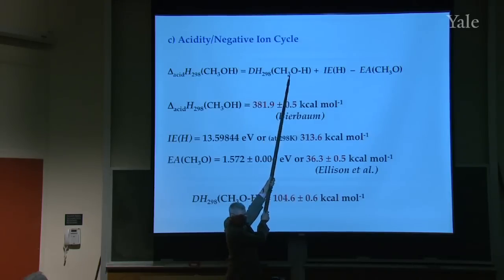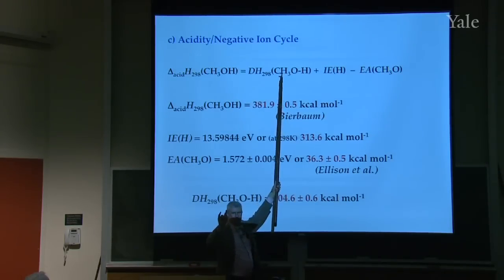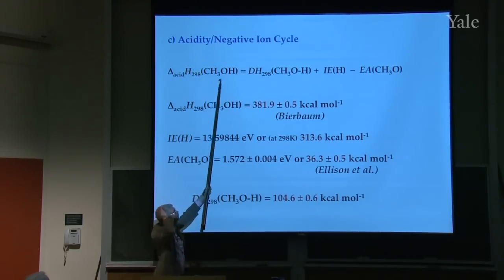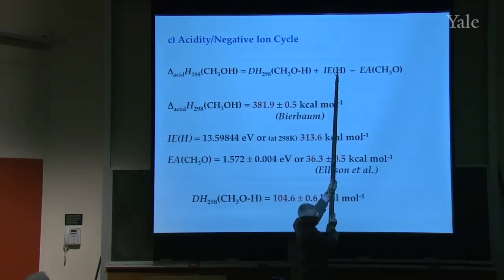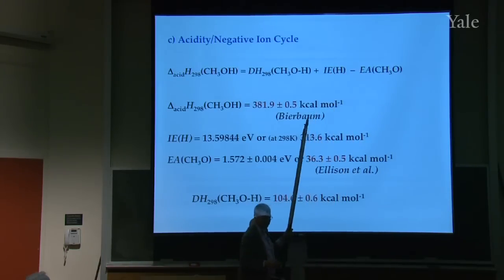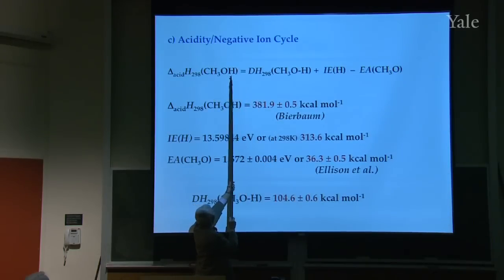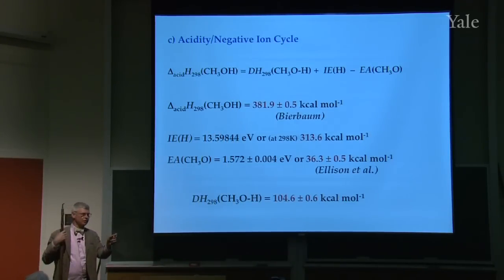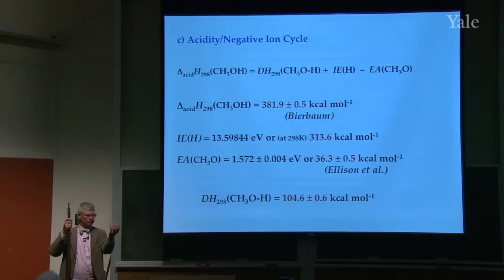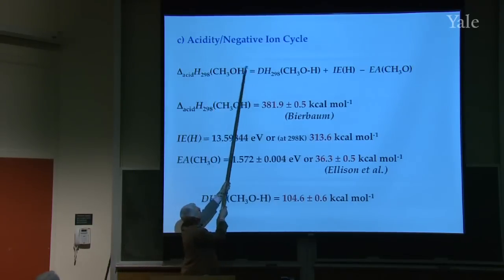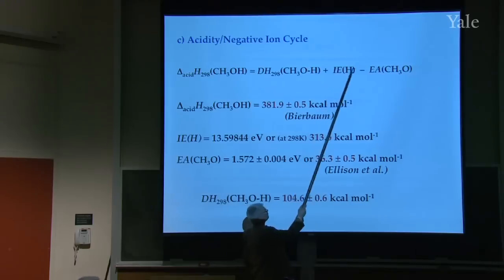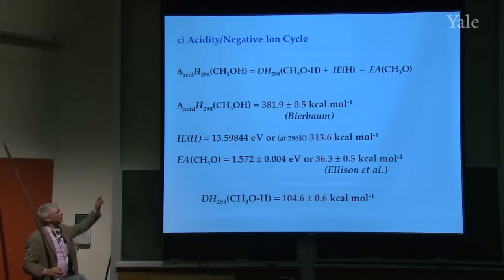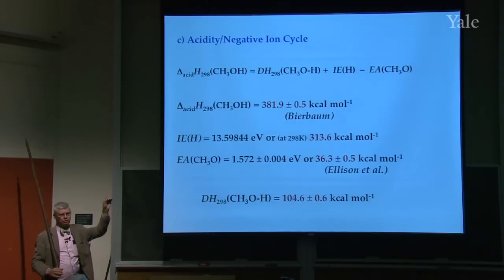This bond energy is obtained through a cycle, and to do this cycle we have to do two difficult experiments. Bierbaum has to measure the acidity — that's a very large number, about 380 kcal/mol. The electron affinity and the ionization energy of hydrogen atom are known, but you have to measure the electron affinity of this radical. This number comes from a cycle where you're adding and subtracting large numbers. If you have a number you're after and you're taking differences of large numbers, any mistake is going to show up in the bond energy. A famous chemist named Colson used to say this procedure is like weighing a captain on a ship by weighing the ship with and without the captain.